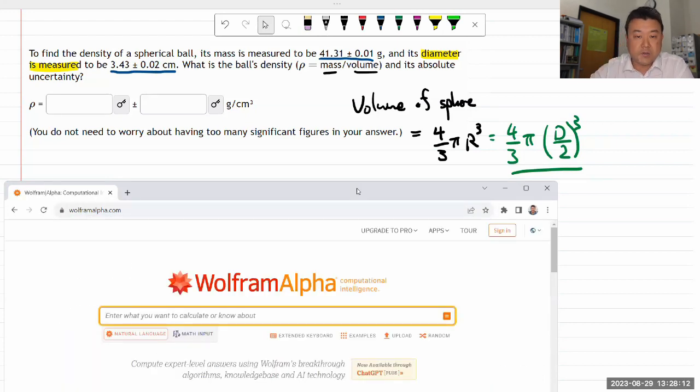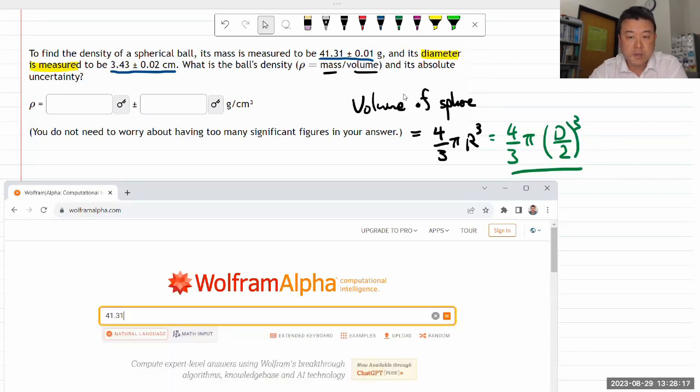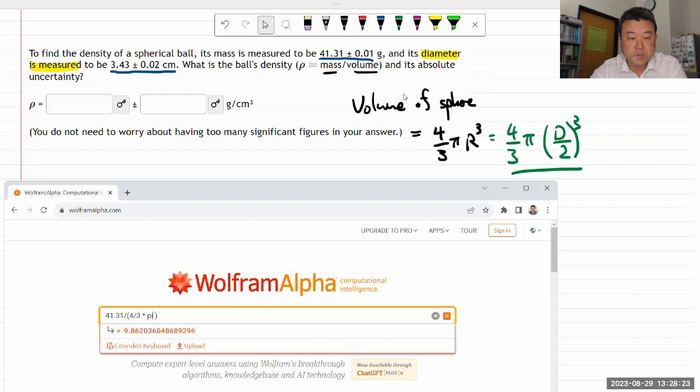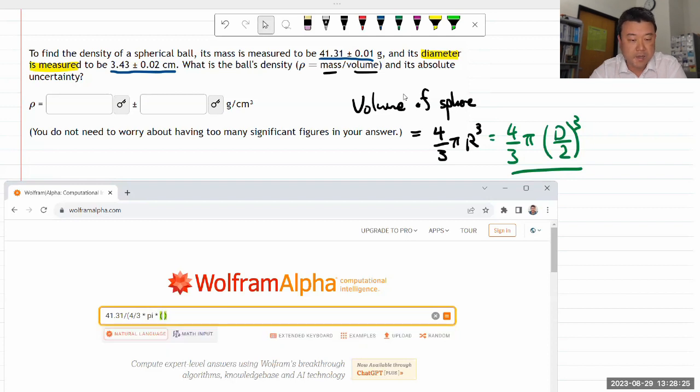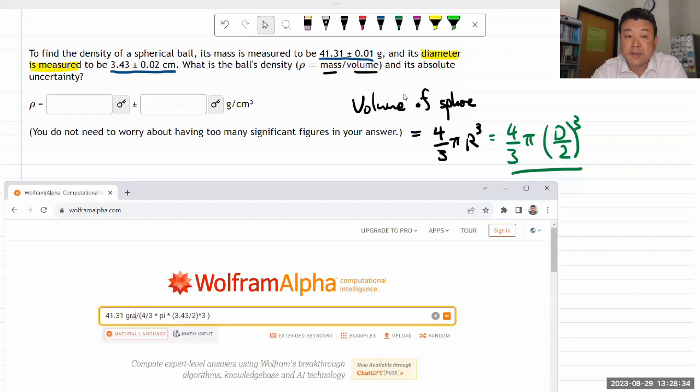I'm given the mass, I'm going to use the best value given: 41.31. I need to divide it by the volume of the sphere, that's going to be 4/3 times π times diameter 3.43 divided by 2, cubed.